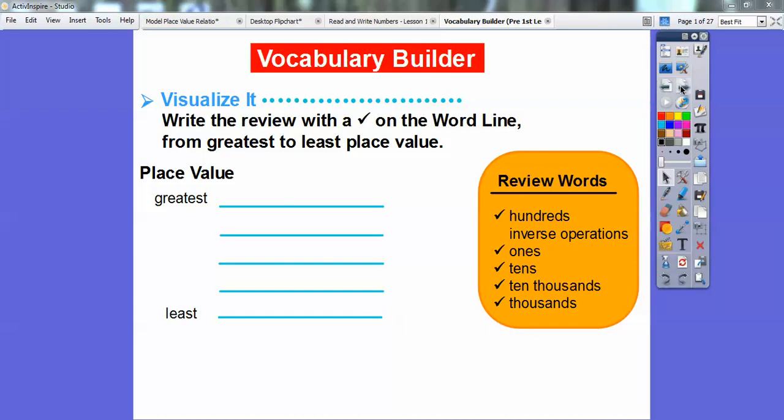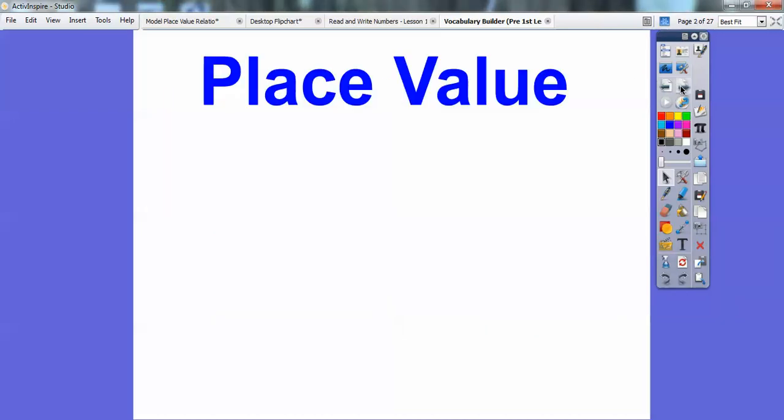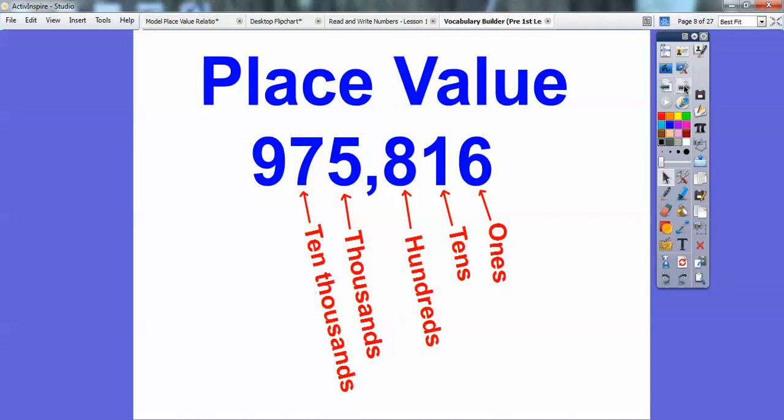Let's do a little recap. Here's the place value. I just made a random number: 975,816. This 6 is in the 1's position. The 1 is in the 10's position. The 8 is in the 100's position. The 5 is in the 1,000's position. The 7 is in the 10,000's and finally the 100,000's.